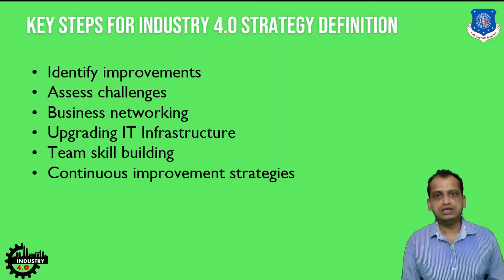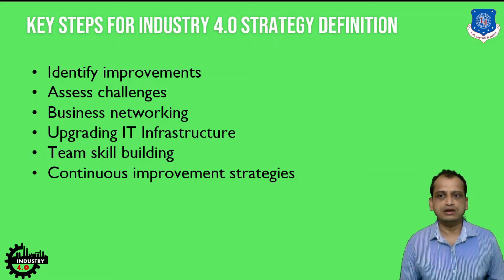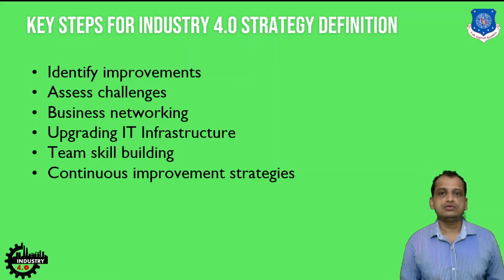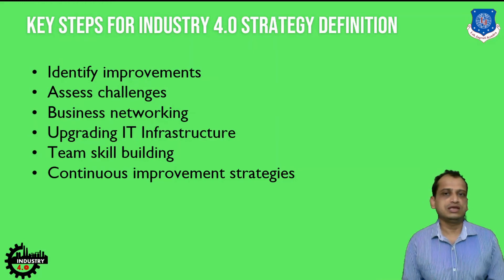You also build networks in the overall value chain — starting from suppliers to vendors and distributors, as well as internal manufacturing — you will try to build the network and integrate manufacturing with the help of data gathering. You will also upgrade the IT infrastructure, because conventional IT infrastructure may not be capable of gathering data when you are incorporating sensors, actuators, and controlling equipment. You also need skilled persons and skilled employees, so you have to build teams with distributed tasks to achieve successful implementation.